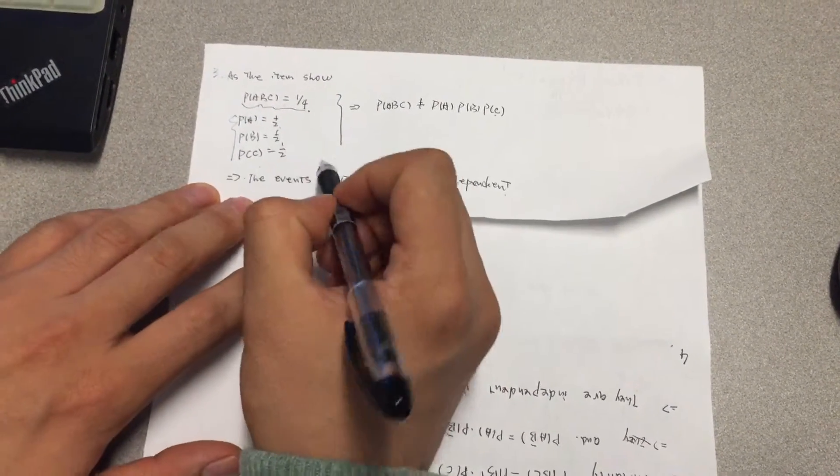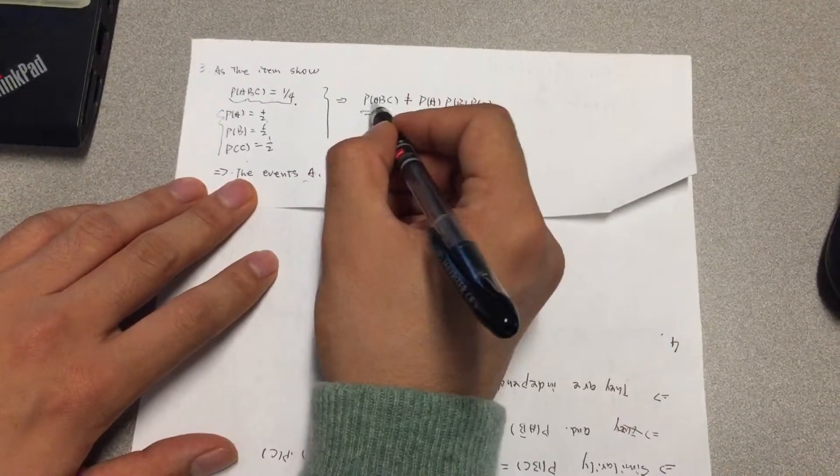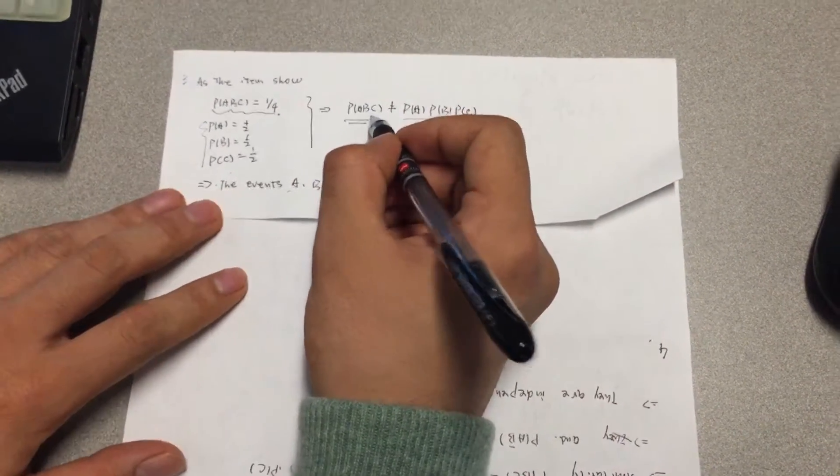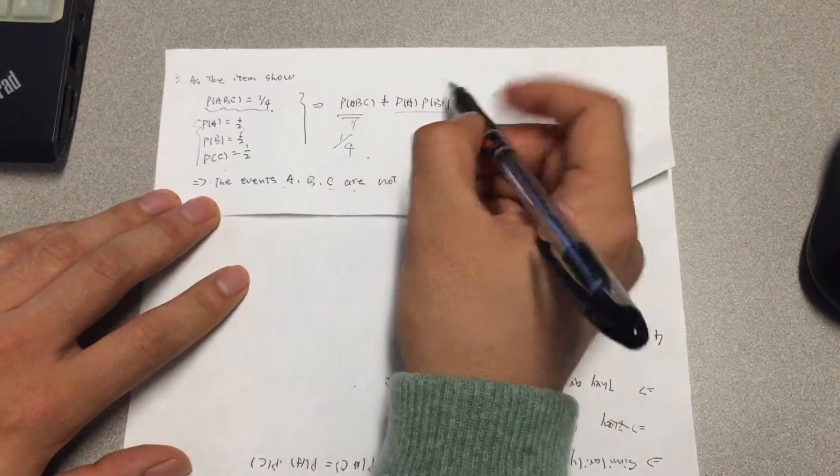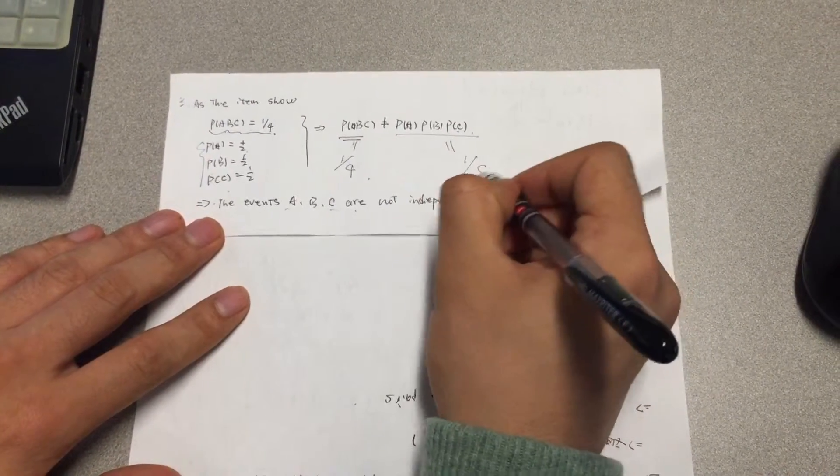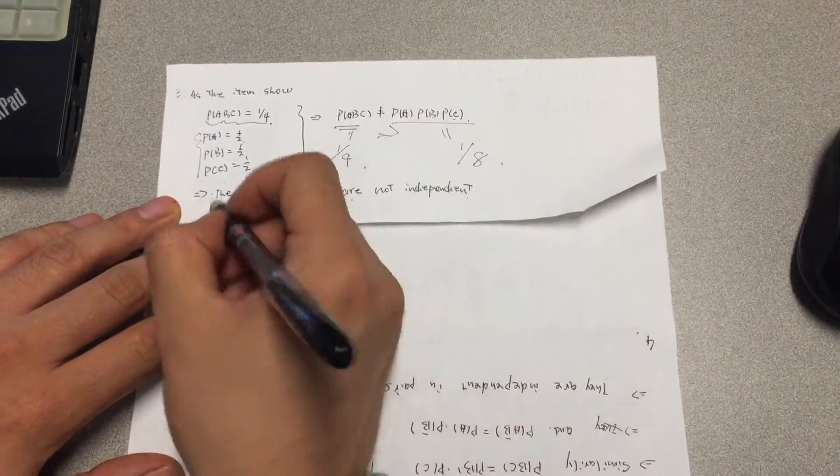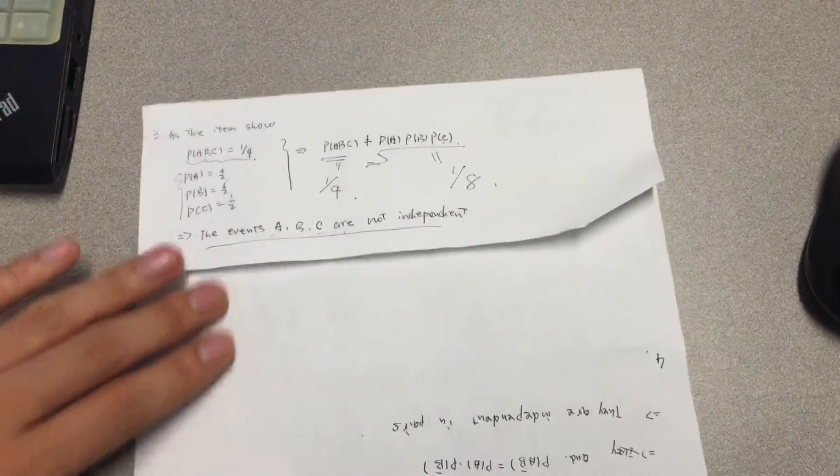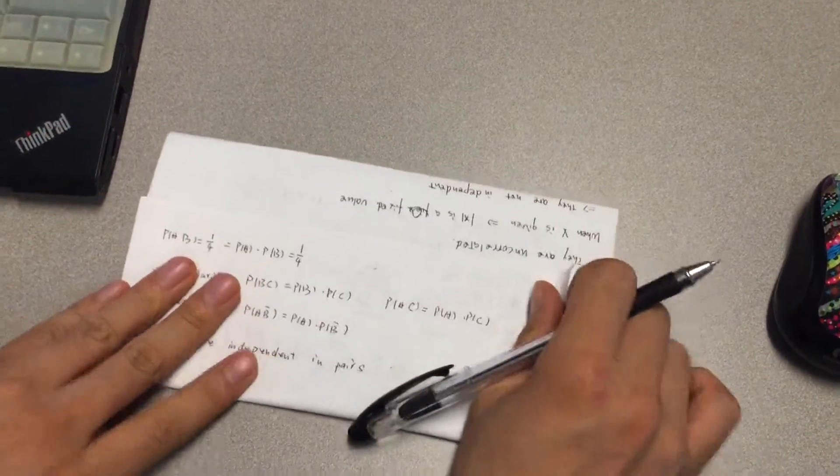and also 1/2. So we can derive this equation: P(A∩B∩C) equals 1/4, and P(A)·P(B)·P(C) equals 1/8. Since they are not equal, we can conclude they are not independent.